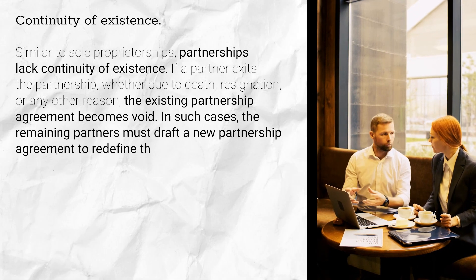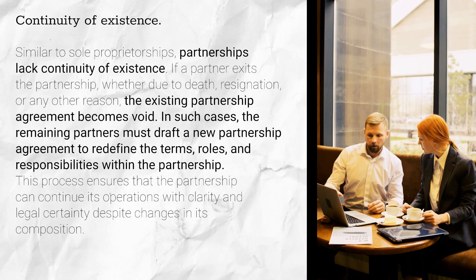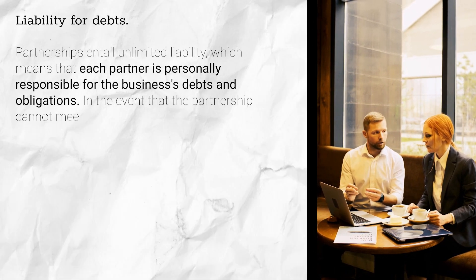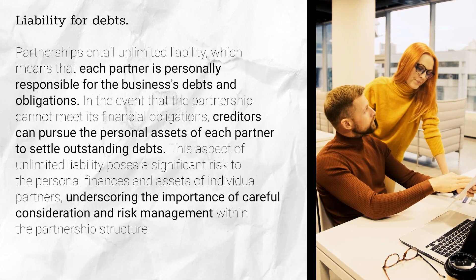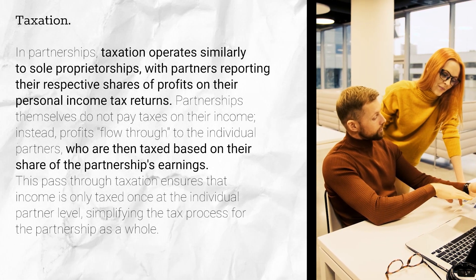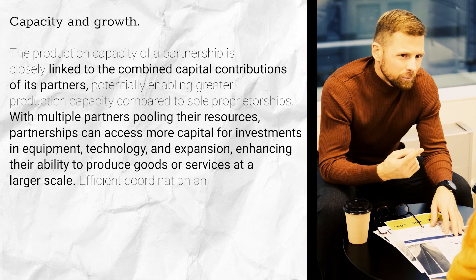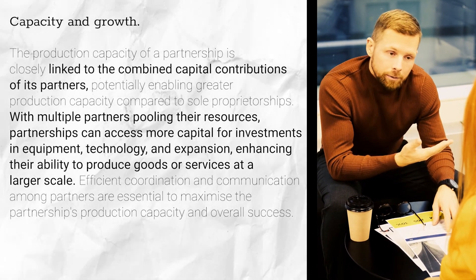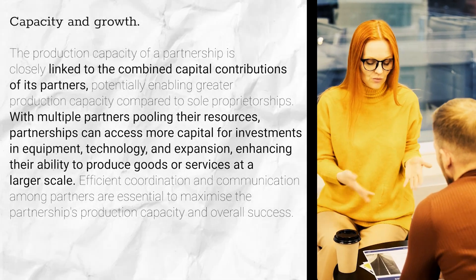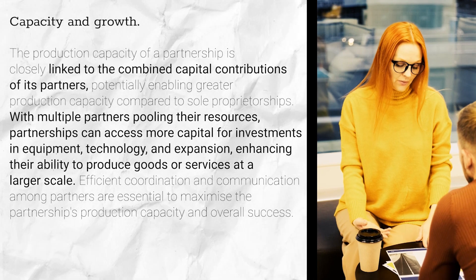Just like sole proprietorships, partnerships have no continuity of existence. If a partner passes on or leaves the partnership, a new partnership agreement must be drawn up. Partners bear unlimited liability, meaning personal assets could be used to settle business debts. Partners must also report their share of profits on their personal income tax returns. The capacity of a partnership to produce is tied to the combined capital contributions of partners, potentially allowing for greater production capacity compared to sole proprietorships. However, effective capital utilisation hinges on partners' agreement on its allocation.